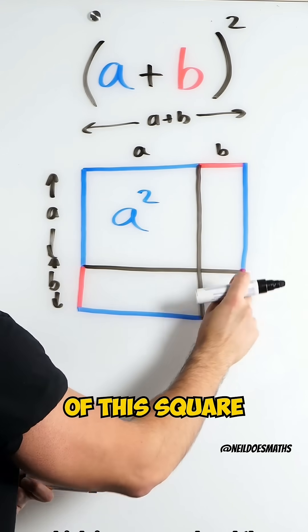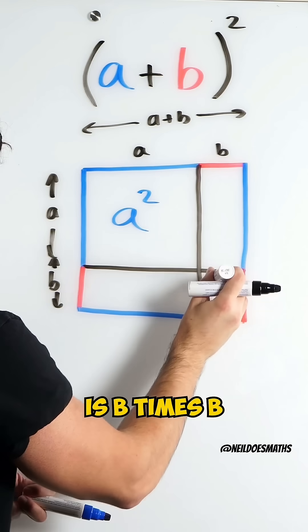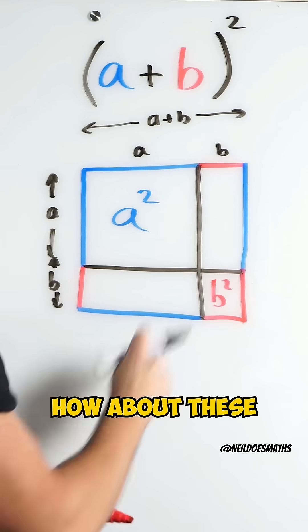And the area of this square is B times B, B squared. How about these?